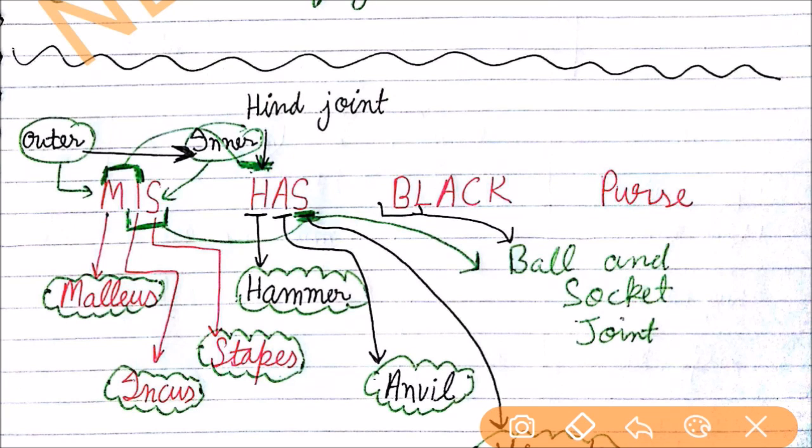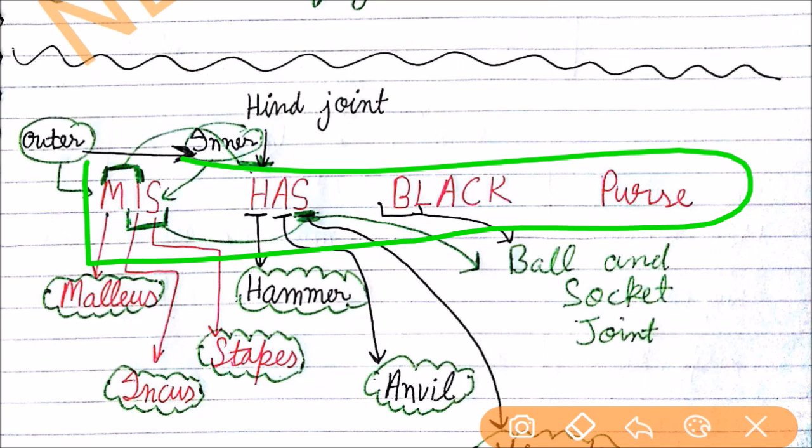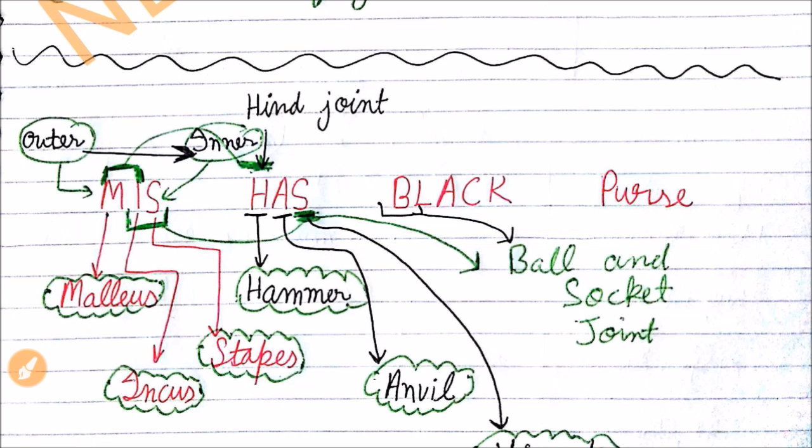Now let's see the trick. So trick for human ear is very simple. You just need to remember this whole sentence, very simple sentence: Miss Has Black Purse. Now first question was to remember the sequence of different bones. So for that we need to use Miss: M for malleus which is outermost, I for incus which is middle, and S for stapes which is innermost bone.